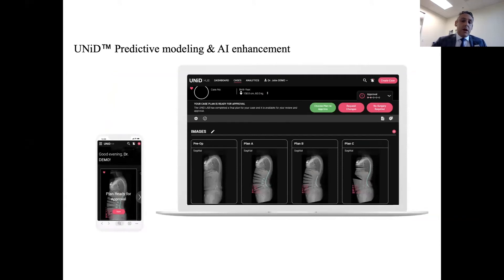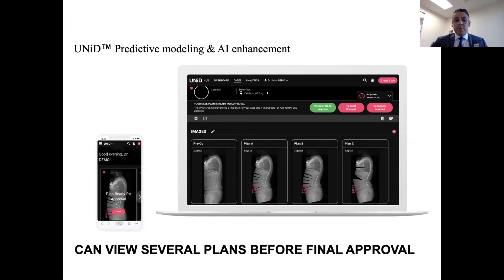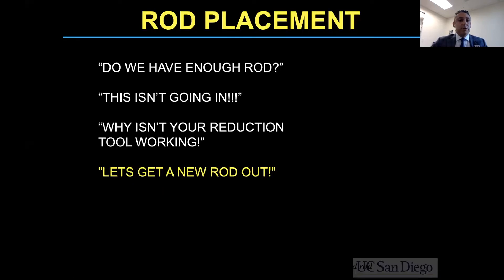This is what the actual plan looks like. You have a pre-op, a Plan A, Plan B, Plan C. Those plans really depend on what you want to see. You can submit one plan or several plans. If you want to see what the case would look like with or without a three-column osteotomy, going to the upper thoracic or stopping in the lower thoracic as a UIV, you can see all of those curves before selecting your final approved plan.